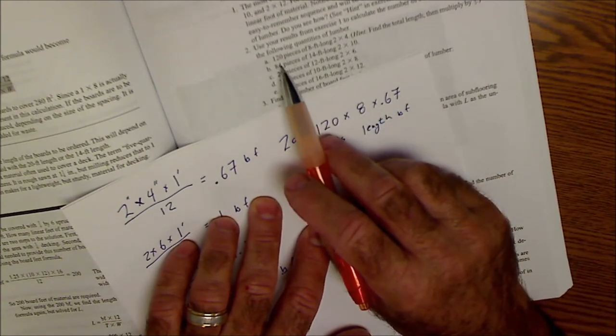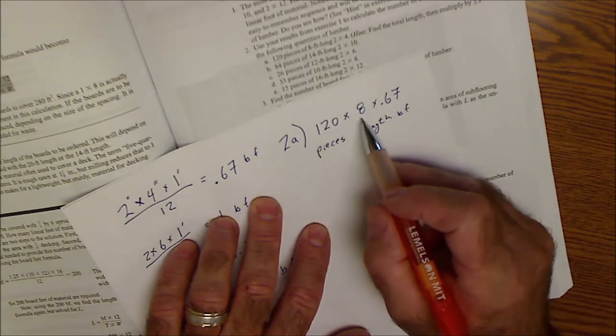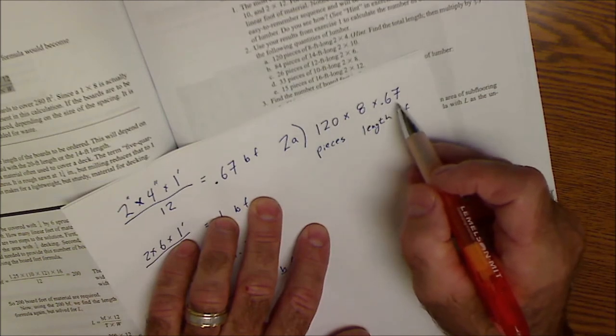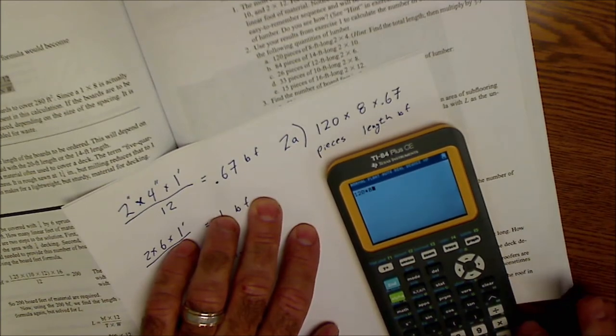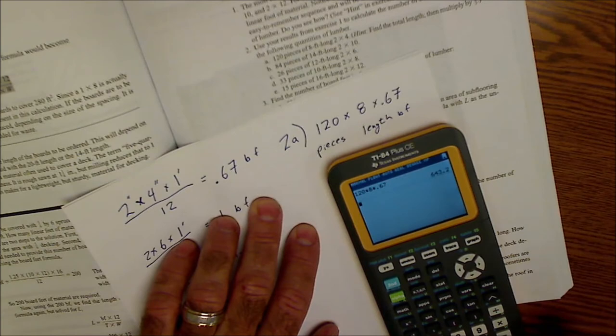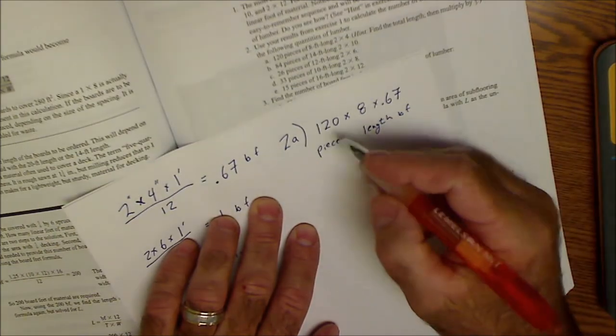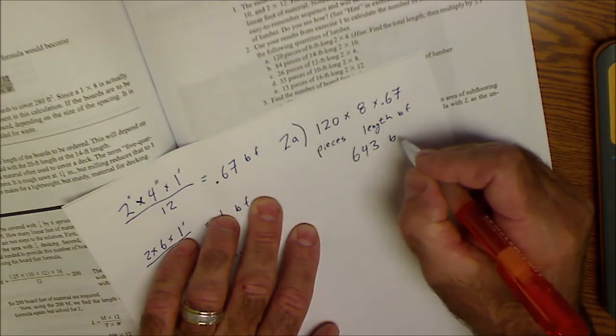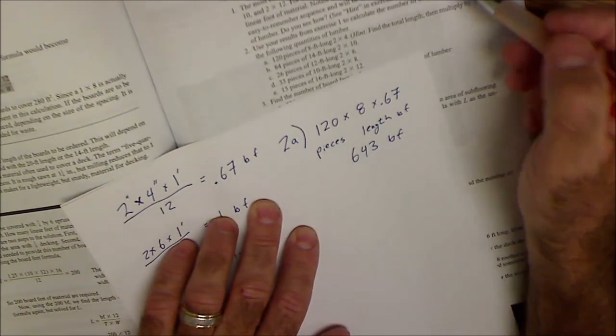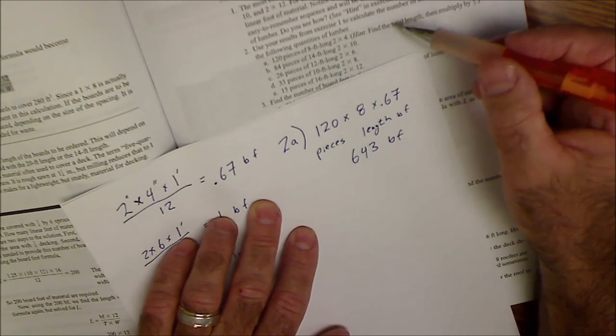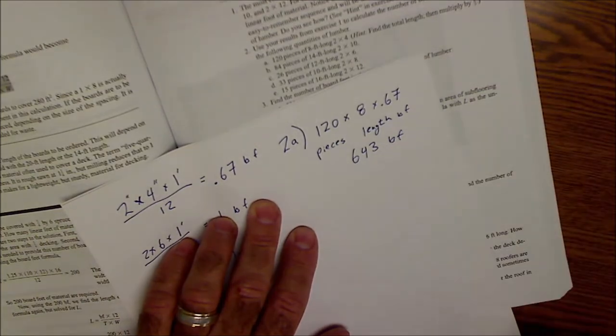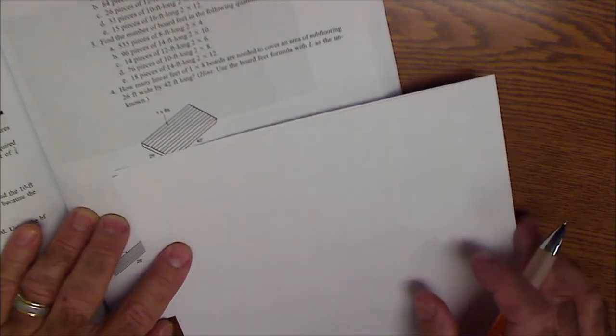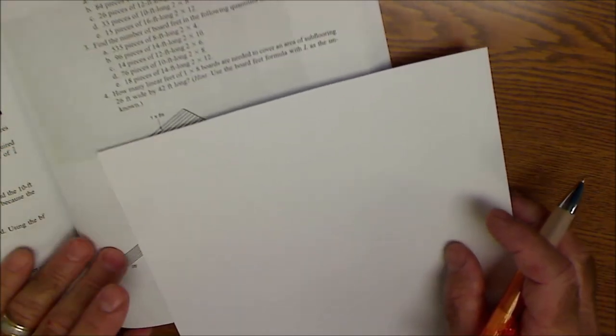So how many total board feet is 120 pieces, 8 foot long at 0.67 board feet per foot. So I'm going to take that 120, multiply it by 8, multiply it by the 0.67, and I get a total of 643 board feet. Doesn't say what kind of wood it is, probably Doug fir, which is the standard framing lumber. So that Doug fir, probably $1.50 board foot. So you're talking about close to 900 bucks or more.